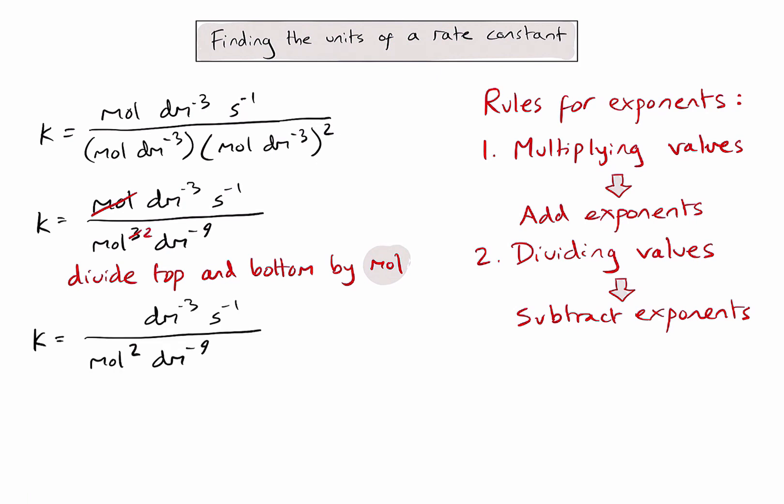Now let's simplify the decimetres units by dividing the top and bottom by decimetres to the minus three. This will allow me to cancel out the decimetres to the minus three on the top and then change the decimetres to the minus nine on the bottom to decimetres to the minus six, leaving me with something like this.